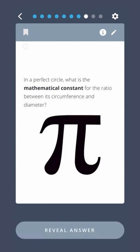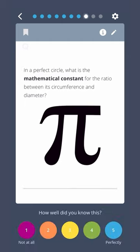In a perfect circle, what is the mathematical constant for the ratio between its circumference and diameter? Pi.